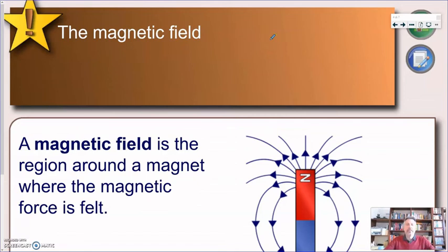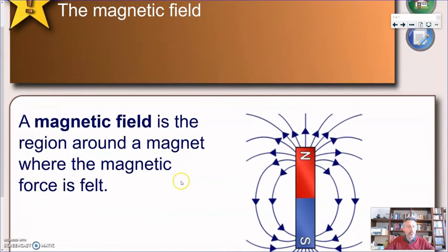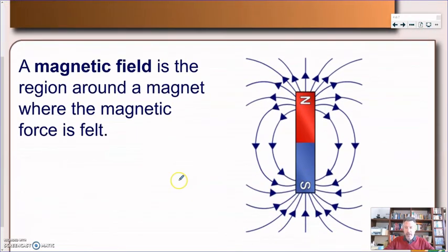So now we can define what is the magnetic field of a magnet. So we're going to say that the magnetic field is a region around the magnet where the magnetic force is felt.